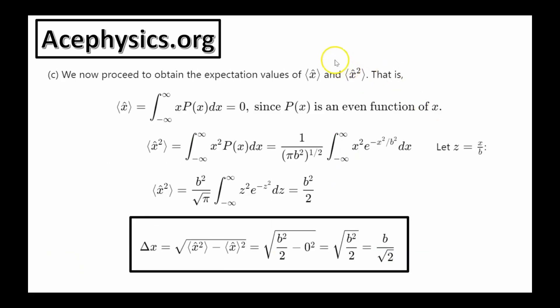Part C asks us to calculate the average value of x, the average value of x squared, and the uncertainty in position. These are important calculations done frequently in quantum mechanics. In this case, the particle is in an eigenstate of the Hamiltonian but not of the position operator, meaning it's not localized at a single position but exists in a spread of possible positions. The Hamiltonian consists of both position and momentum operators, which don't commute — this is the origin of the uncertainty principle. To calculate the average x value, we integrate x times psi squared dx. The average value of x equals zero.